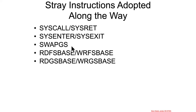Swapgs is used for system calls or potentially interrupts in order to swap around data structures so the kernel can quickly get access to something when it's just transitioned in from user space. The read and write fs/gs space instructions are means by which user space can now have more control over the data structures referenced by fs and gs.